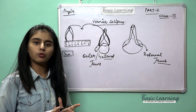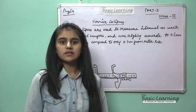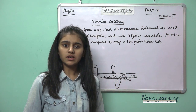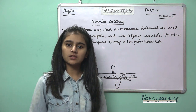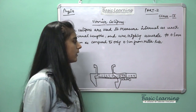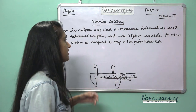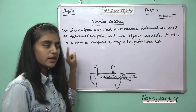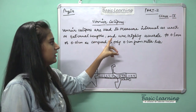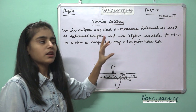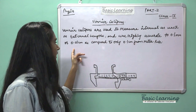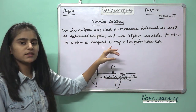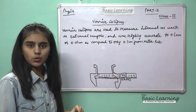Now, the Vernier caliper is the instrument used to measure width or diameter from both the internal and external parts of an object. The proper definition: Vernier calipers are used to measure internal as well as external lengths and are highly accurate to 0.1 mm or 0.01 cm, as compared to only 0.1 cm from a meter rule.